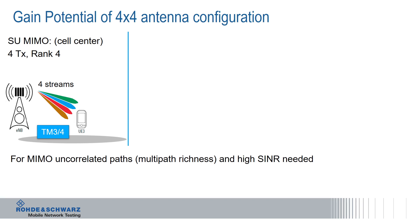On the left picture, we are at the cell center. So 4x4 MIMO can be used here. We are using four streams and they are using the same radio resources, and this improves the data rate close to the base station.